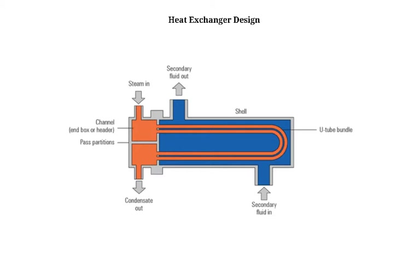Let's start with the basic explanation of the figure. This is a shell-and-tube type heat exchanger — this right here is the shell and you can see the tubes which are in the shell. Steam, or the hot fluid, enters from here, passes all the way through the tubes, and leaves from here. The secondary fluid, which is the cold fluid or cold water, enters from here, passes through, and leaves here. This is a fairly simple diagram and is not what an actual heat exchanger looks like.